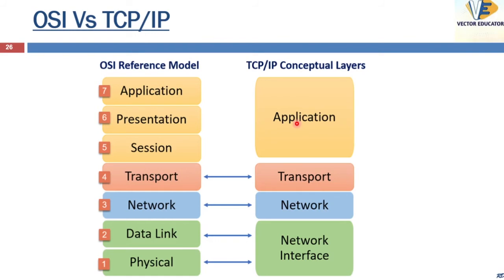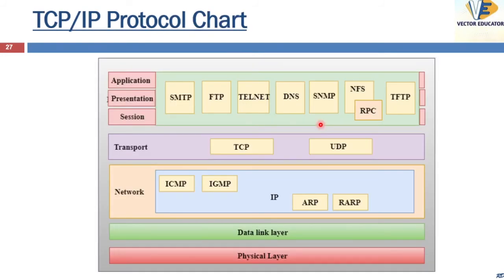The TCP/IP model is similar to the OSI model with certain functionalities merged. The physical layer and the data link layer are merged together to form the network interface layer. The session, presentation, and application layers are merged together to form the application layer. There are various protocols which function at each layer.